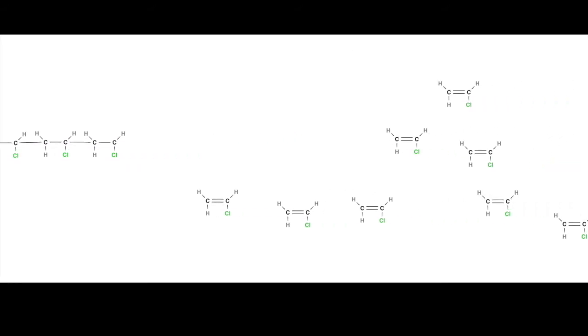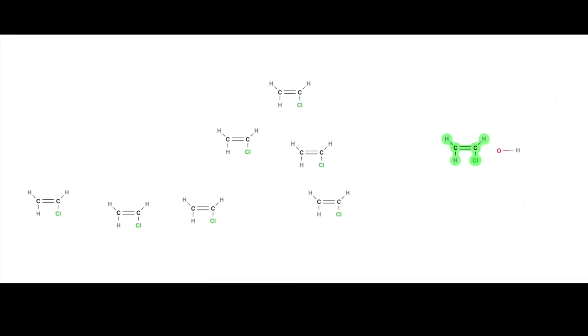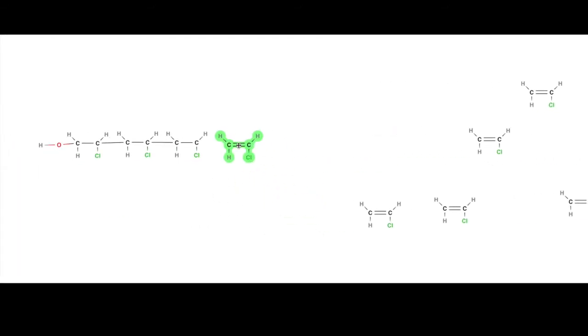We will fast forward this process because radicals collide with monomers in the same way over and over again during propagation. In my demonstration here there are only about 10 monomers, whereas in an actual PVC molecule there will be thousands.